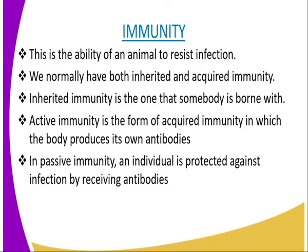Acquired immunity is immunity to particular infections that is not innate, but has developed in the animal's life as it interacts with its environment. Acquired immunity can develop either naturally, in which case it is called natural acquired immunity, or it can also develop artificially, and if it is developed artificially, it is called artificial acquired immunity. Whether developed naturally or artificially, acquired immunity can be active or passive in nature.